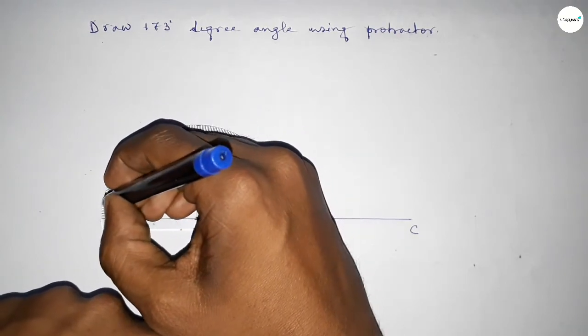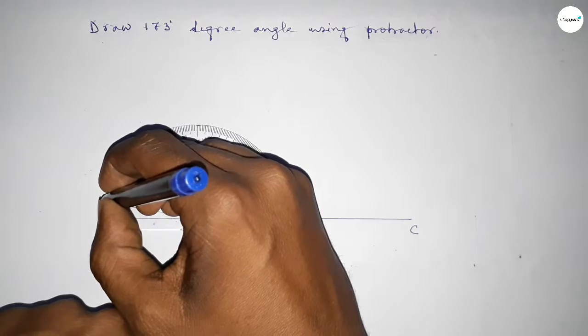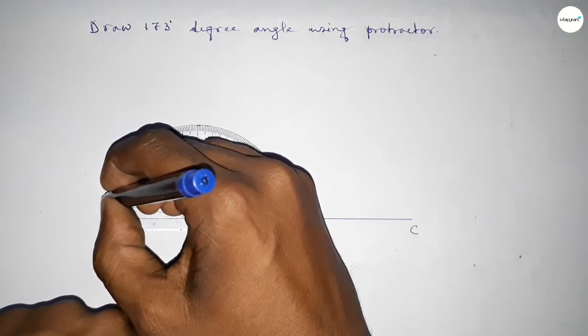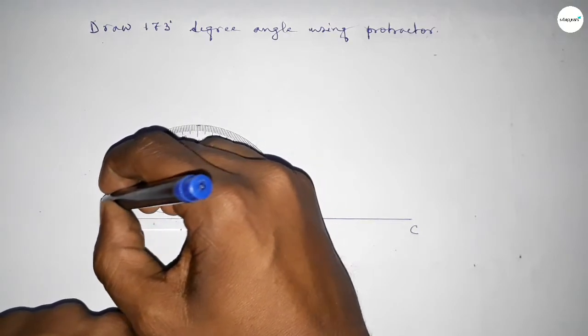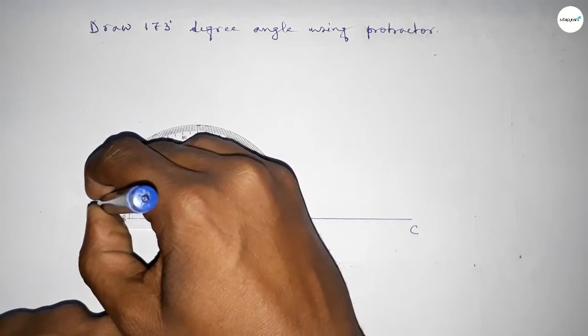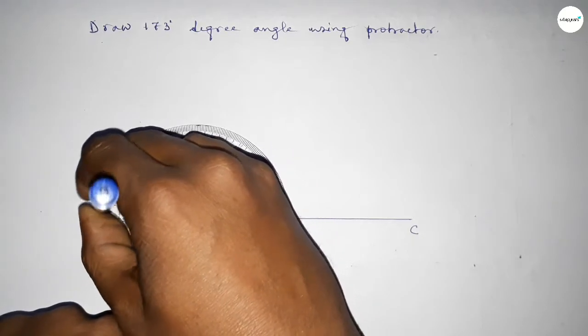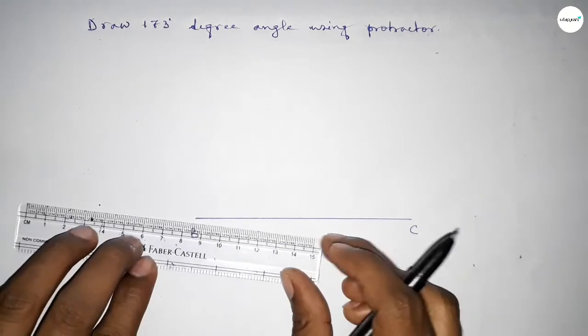171, 172, and this is 173. So this is 173 degrees. Now we have to join this to get 173 degree angle.